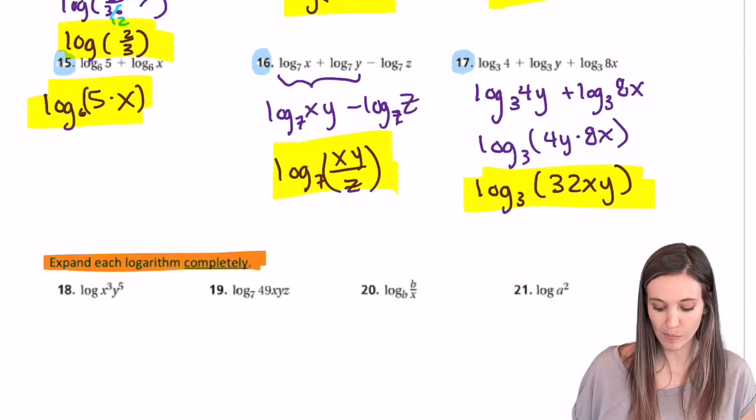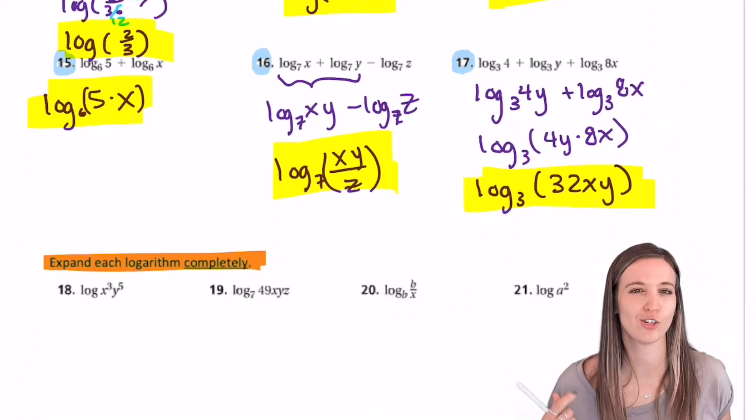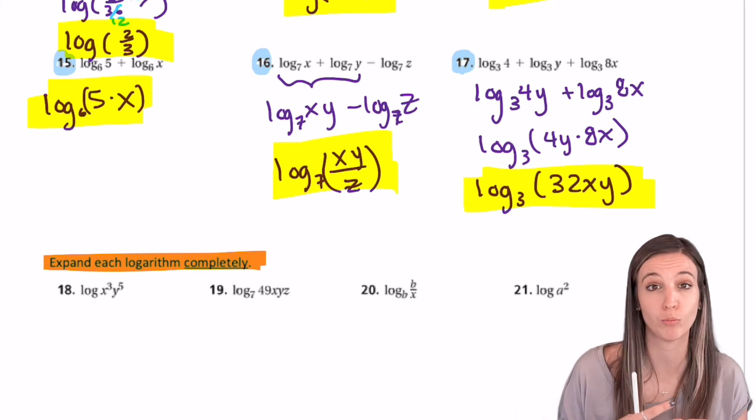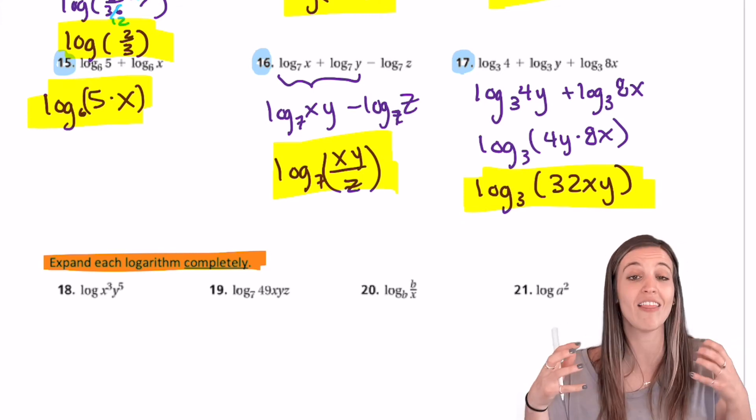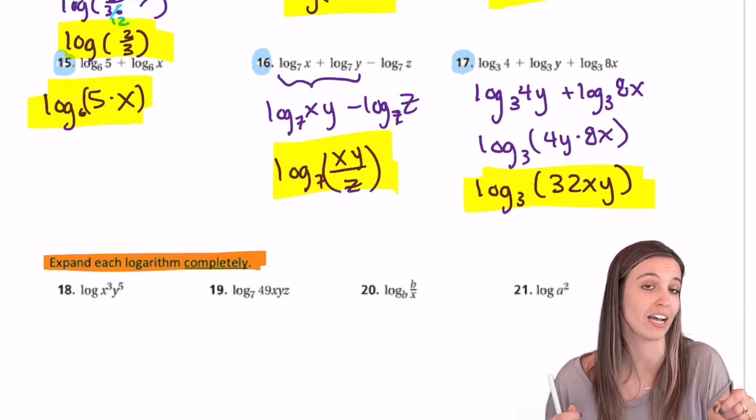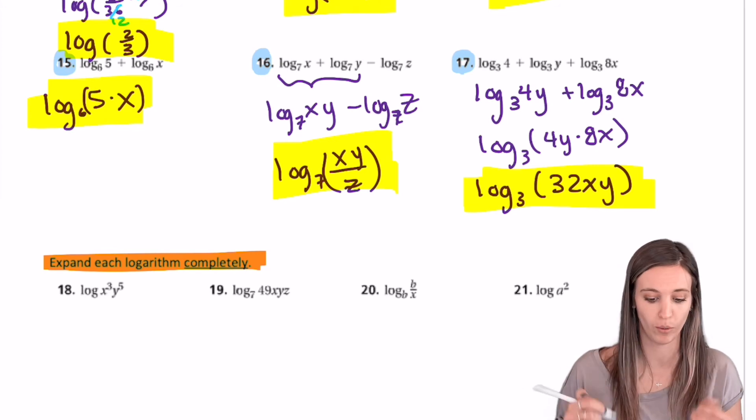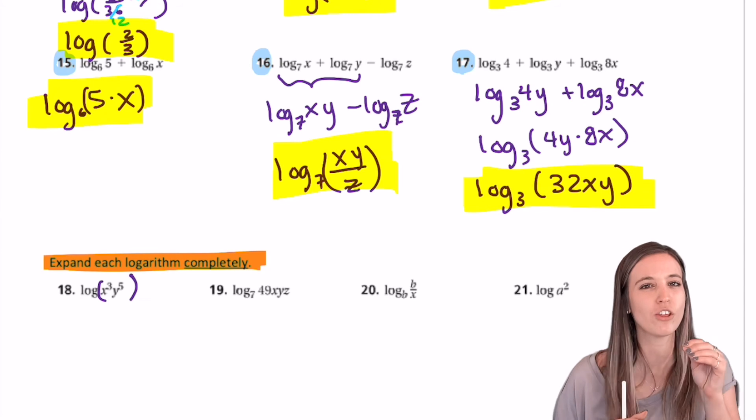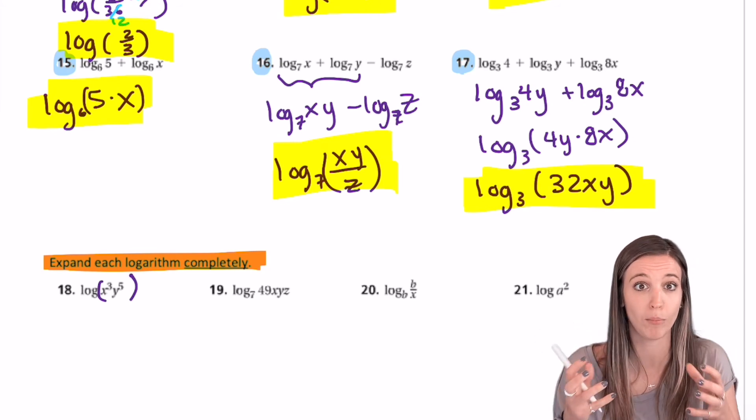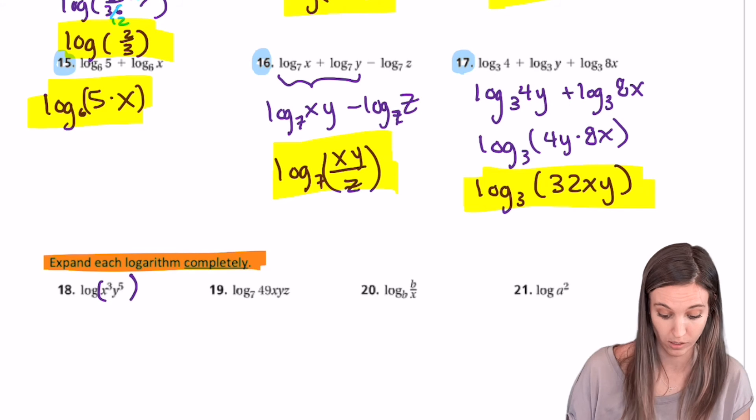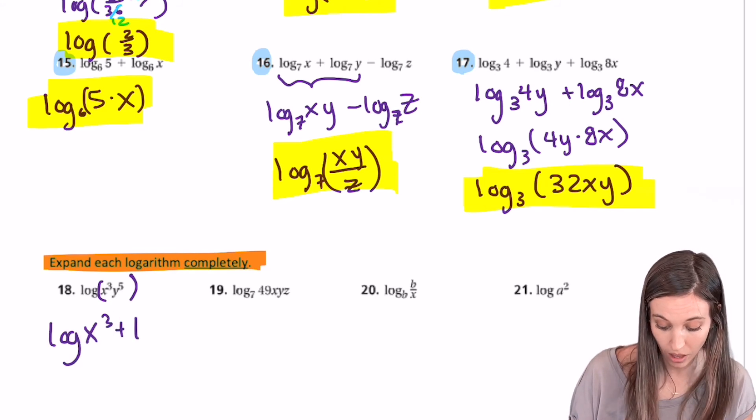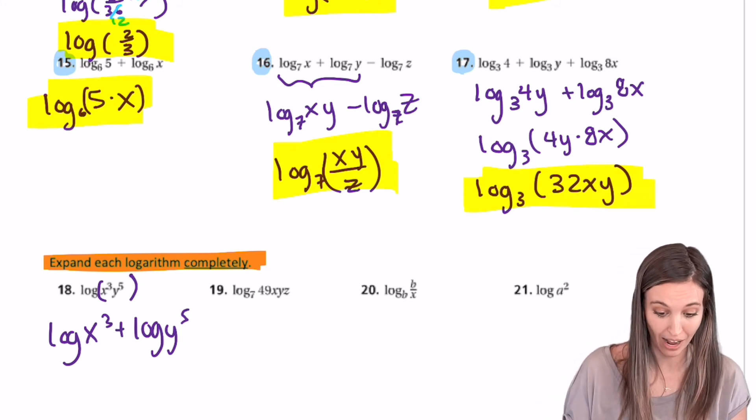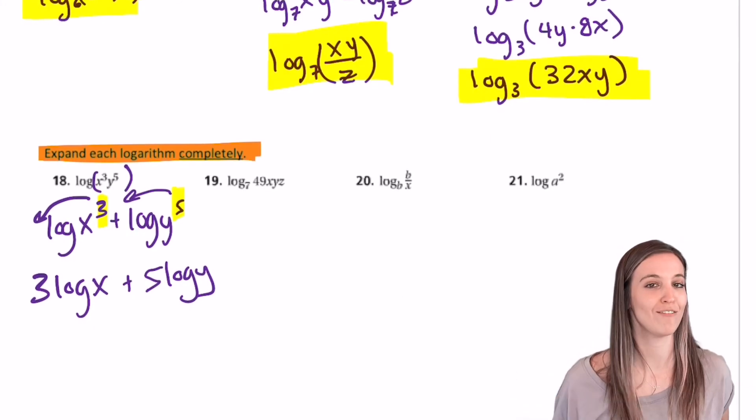So we've practiced writing as a single log. Now let's practice expanding logs. So here in 18, we have log of x to the third, y to the fifth. Well, to expand a log, we're actually going to use the product and the quotient property first to expand, and then we'll use power property to bring down those exponents last. So it's almost like the reverse order of what we were doing before. So if I look closely at this log, I've got x to the third times y to the fifth. While that's product property, I can expand those into two logs being added together. So log of x to the third plus log of y to the fifth. Last thing I can do is bring down those powers and get 3 log x plus 5 log y.